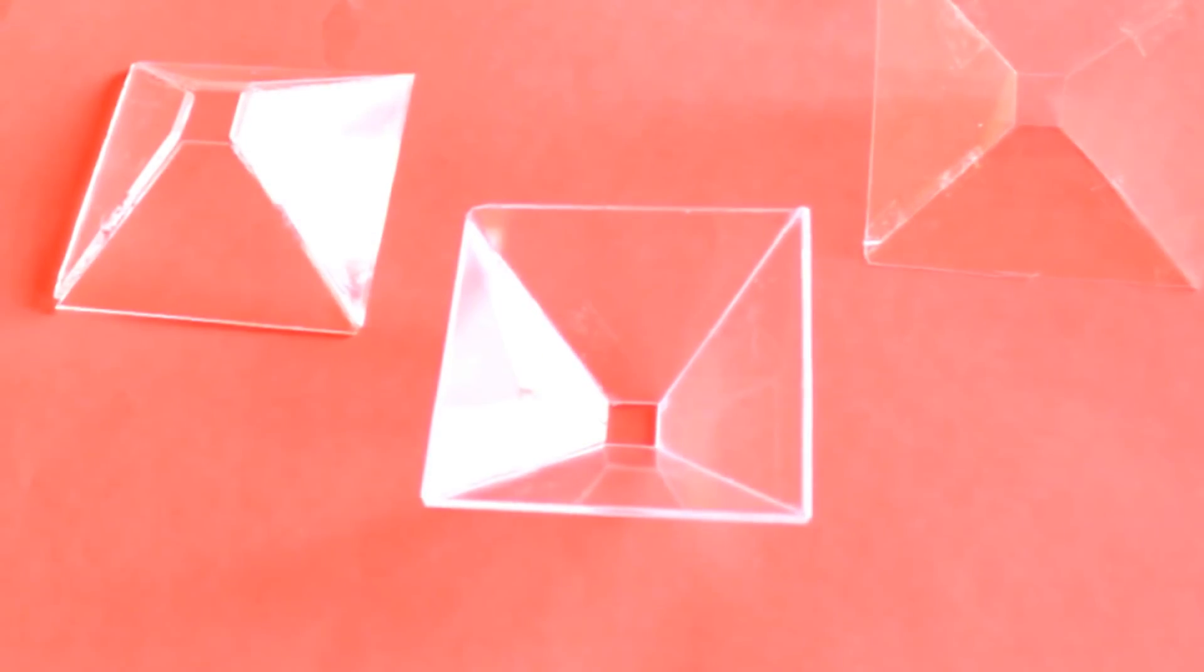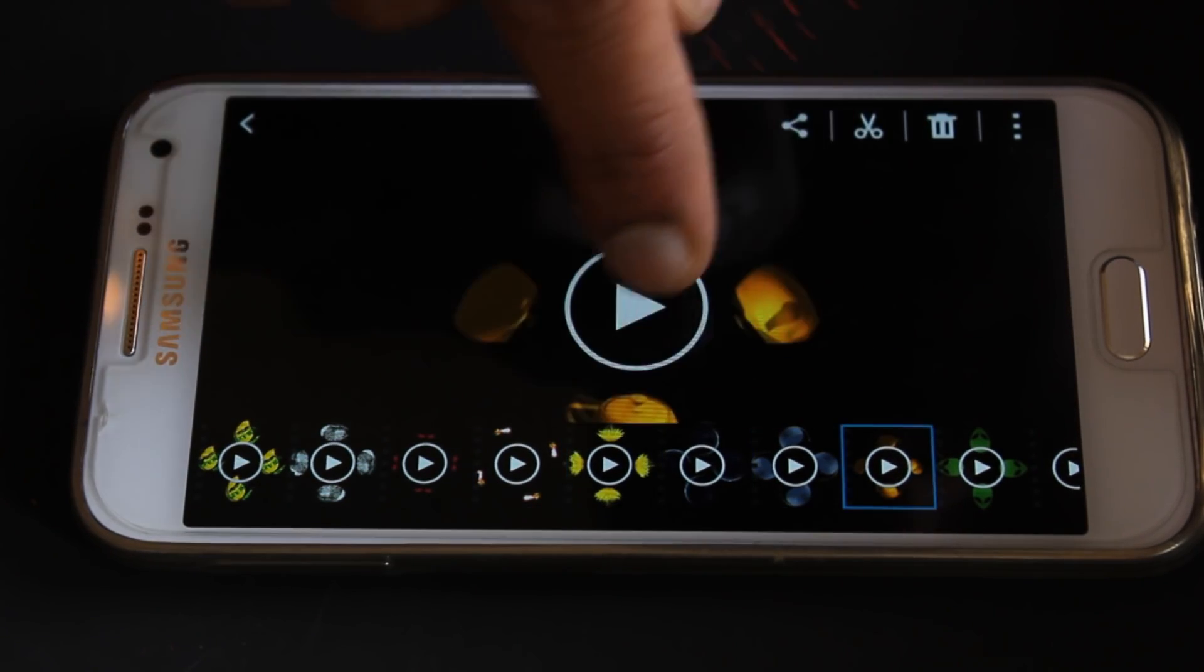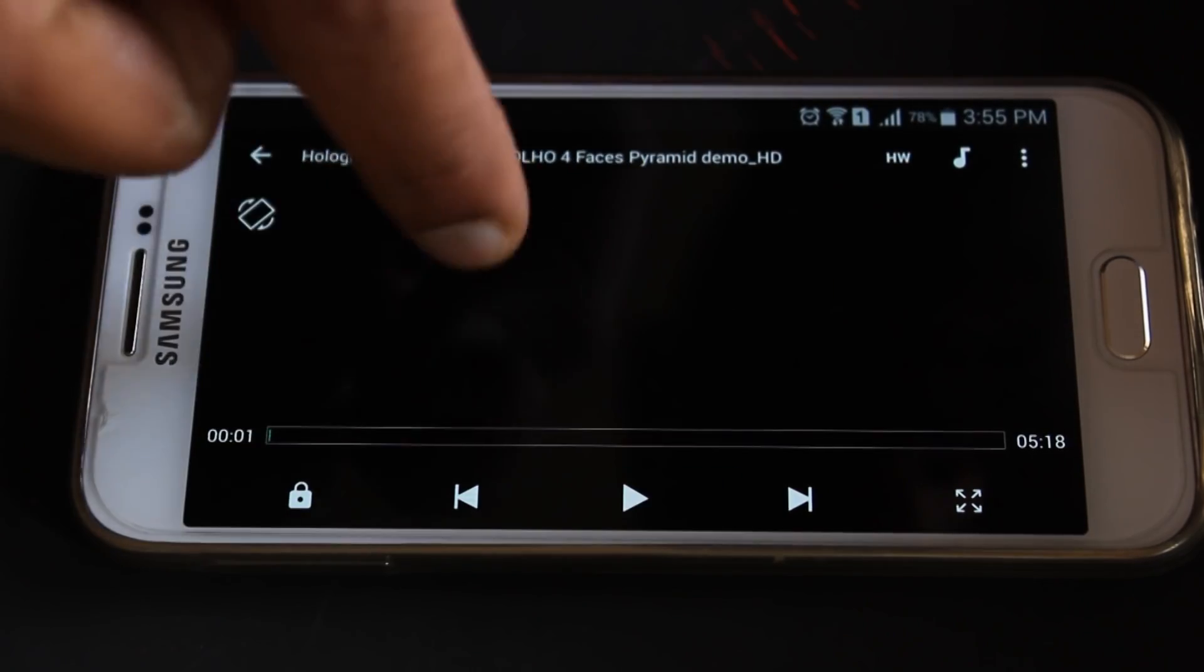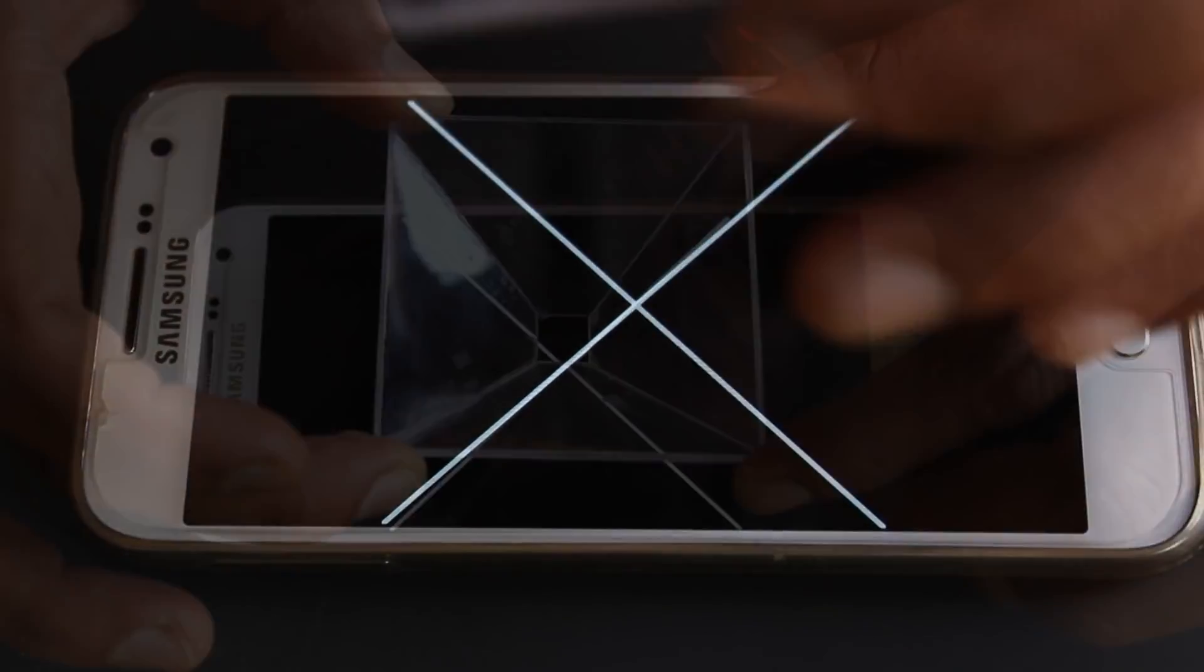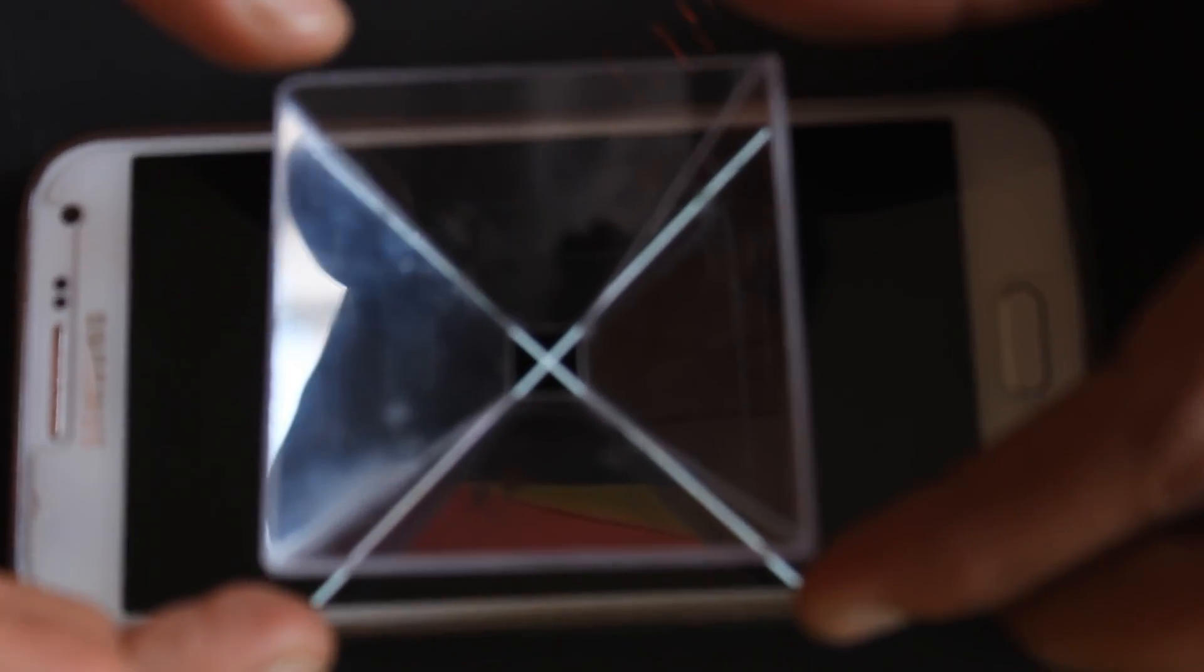Now our pyramid projector is ready. Download 3D holographic videos from the YouTube links in the description below. As I've already downloaded them, it's time for testing. Place the pyramid over the mobile phone like this and now play the holographic video.